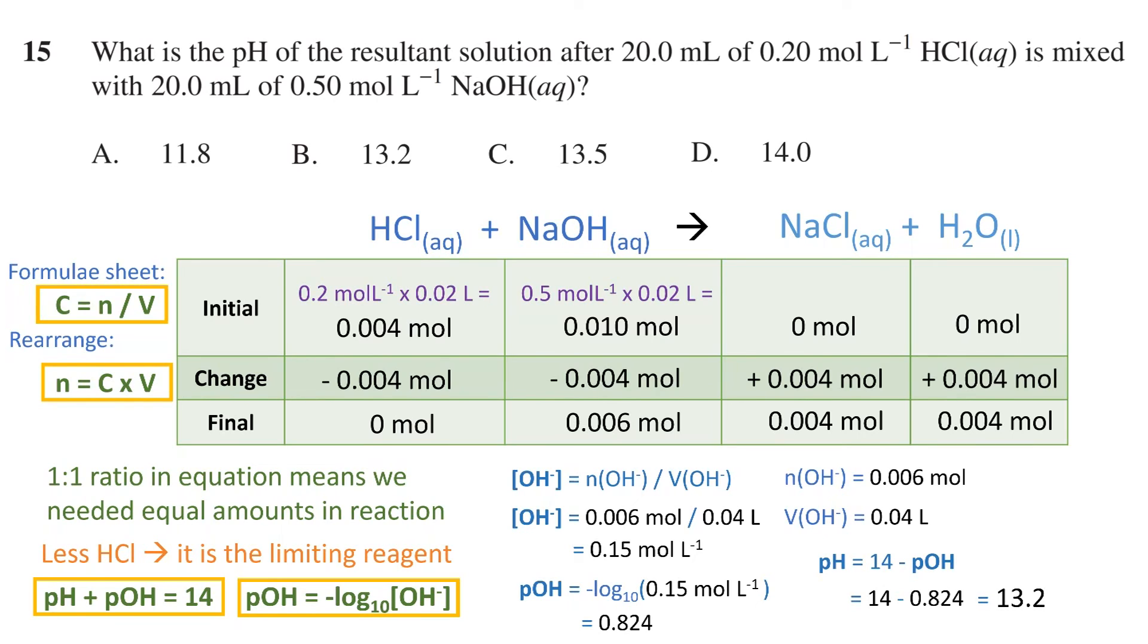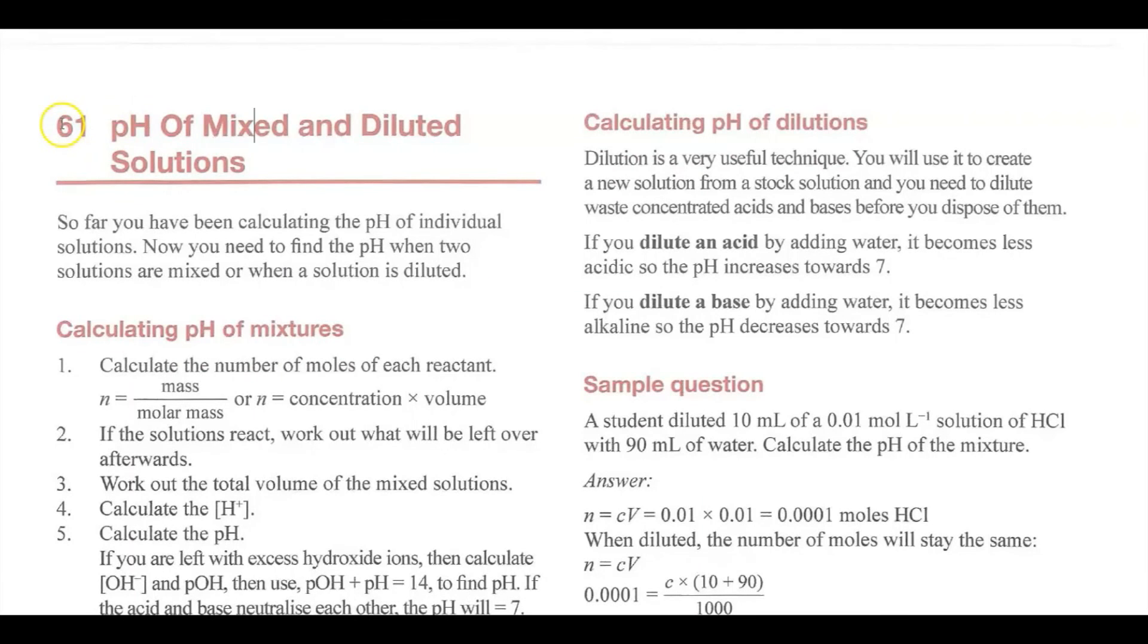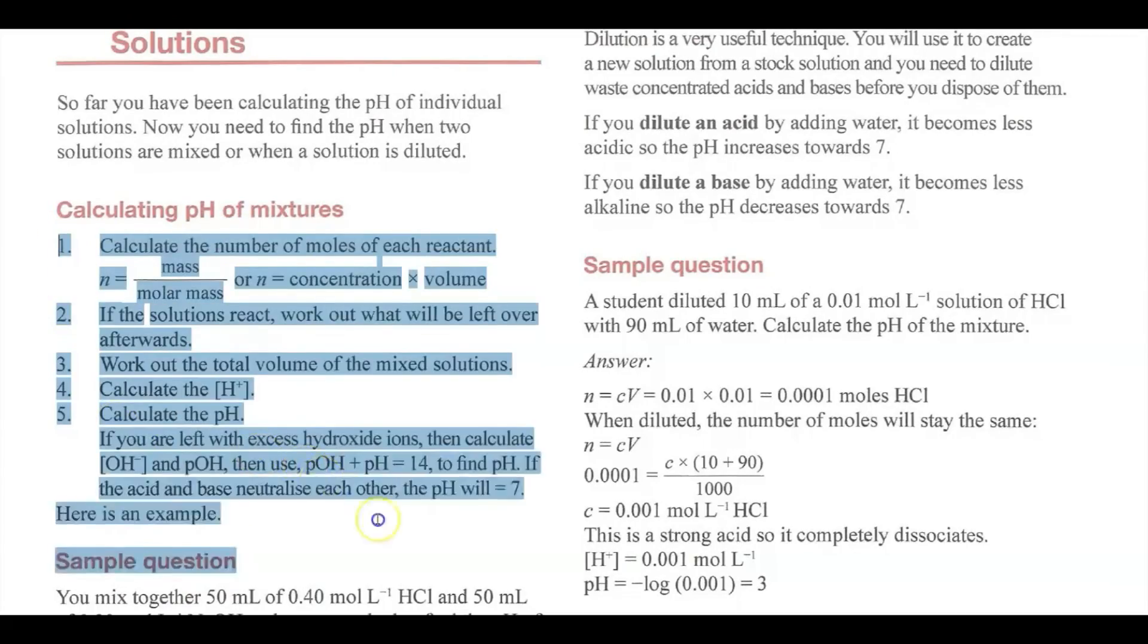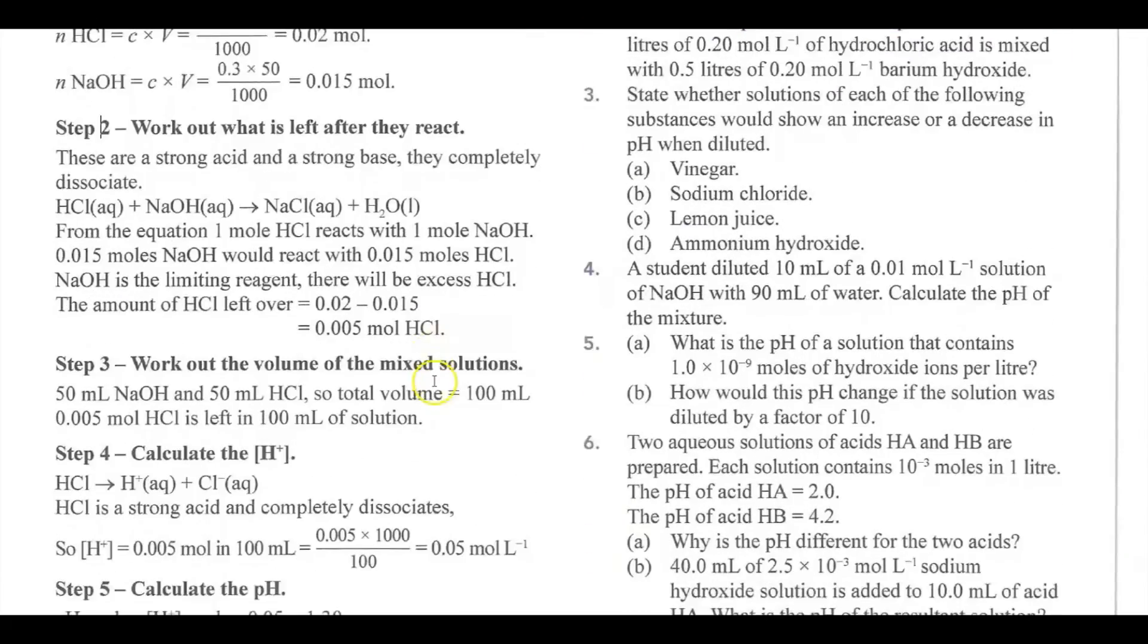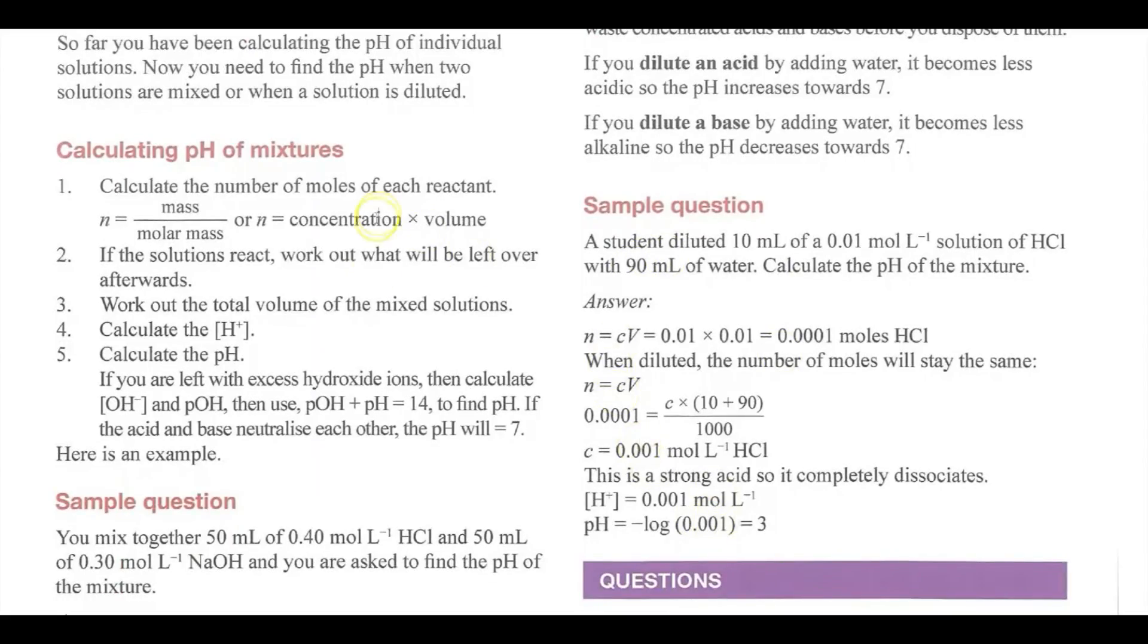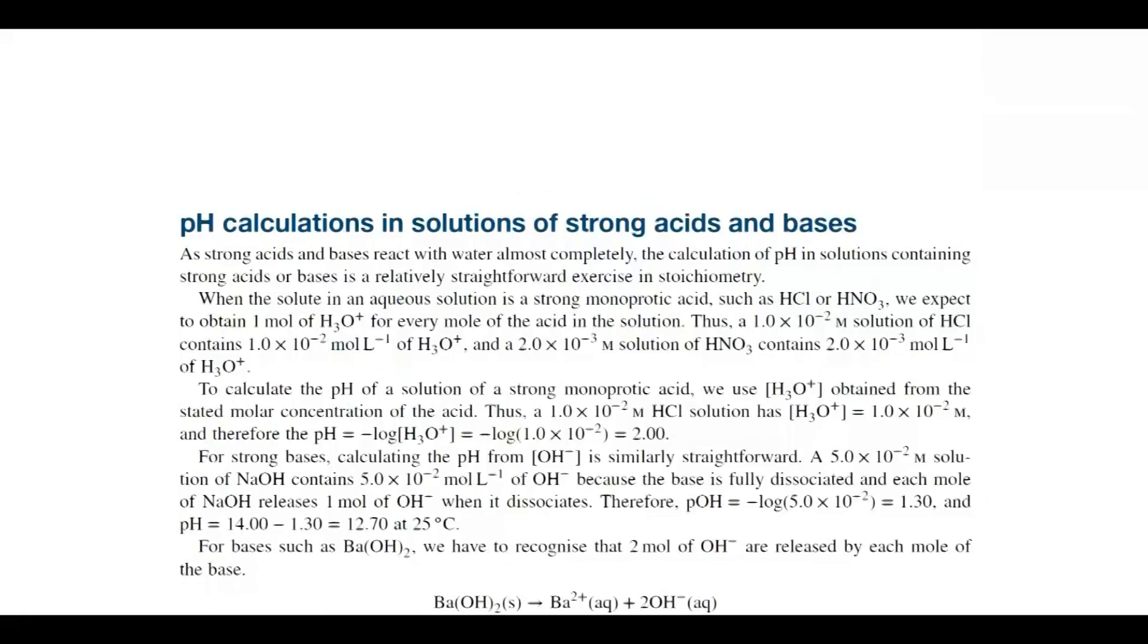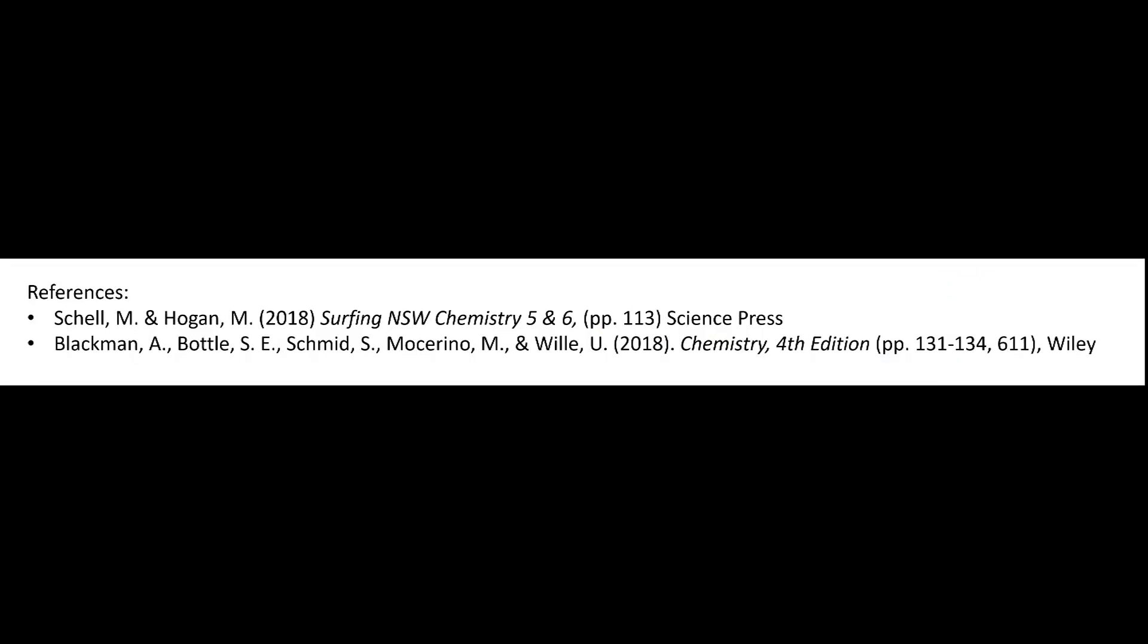For this video, the following references were used. Sheldon Hogan have a great section on exactly this type of question, with a step-by-step guide to answering questions where acidic and basic solutions are added together in varying concentrations and or volumes. This therefore covers when one of the solutions is a limiting reagent, and is a good source for more questions like this. Blackman et al. have separate sections covering limiting reagents in general, and calculation of pH of strong acids and bases. If you have any comments or questions, please leave them below. Thanks for watching and see you next time.